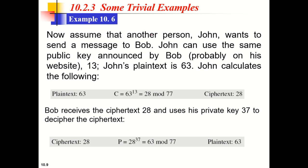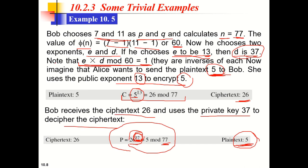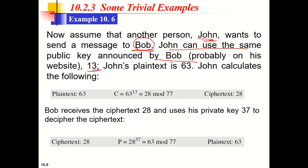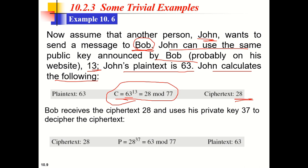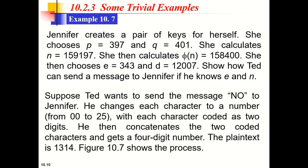In a second example, John wants to send a message to Bob. Since Bob's public key (E = 13, N = 77) is available to everyone, John uses it. John's plaintext is 63. He calculates the ciphertext using C = 63^13 mod 77, getting C = 28. Bob receives ciphertext 28, uses his private key D = 37 in the expression, and recovers the original plaintext 63.